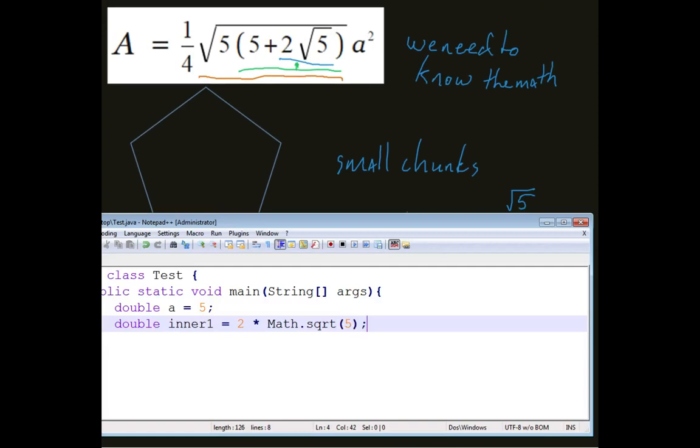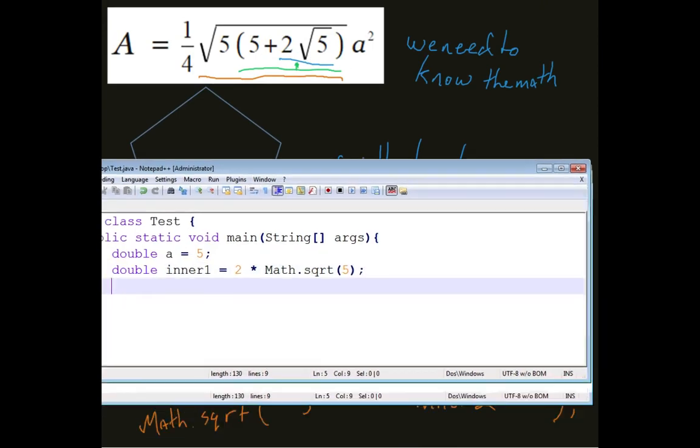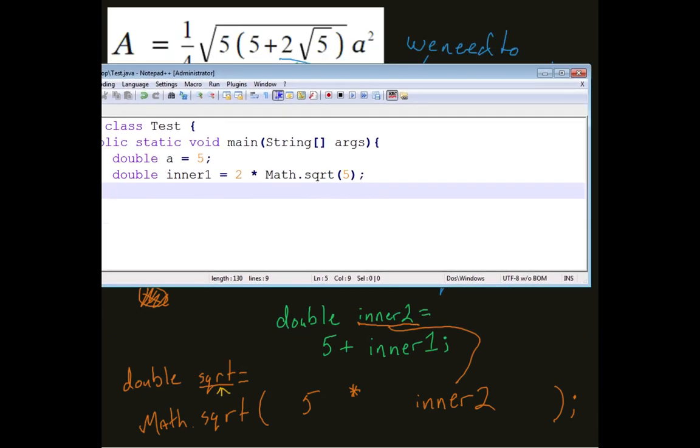So, I, boom. So now, once I've made that, I said that we can make now an inner 2. Double, inner 2. That takes that inner 1 and adds 5 to it. Inner 1.